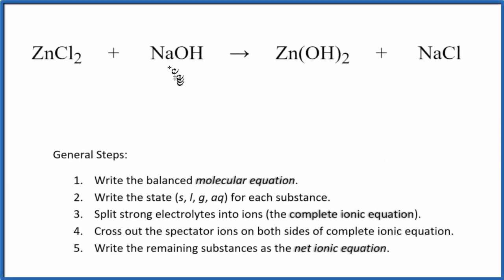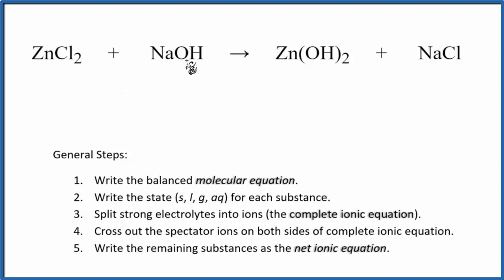In this video, we'll write the net ionic equation for ZnCl2 plus NaOH. This is zinc chloride, and this is sodium hydroxide. The first thing we do with net ionic equations is we balance the molecular equation. This right here is the molecular equation. To balance it, we need to put a 2 here and a 2 over here. So we've balanced the molecular equation for ZnCl2 plus NaOH.